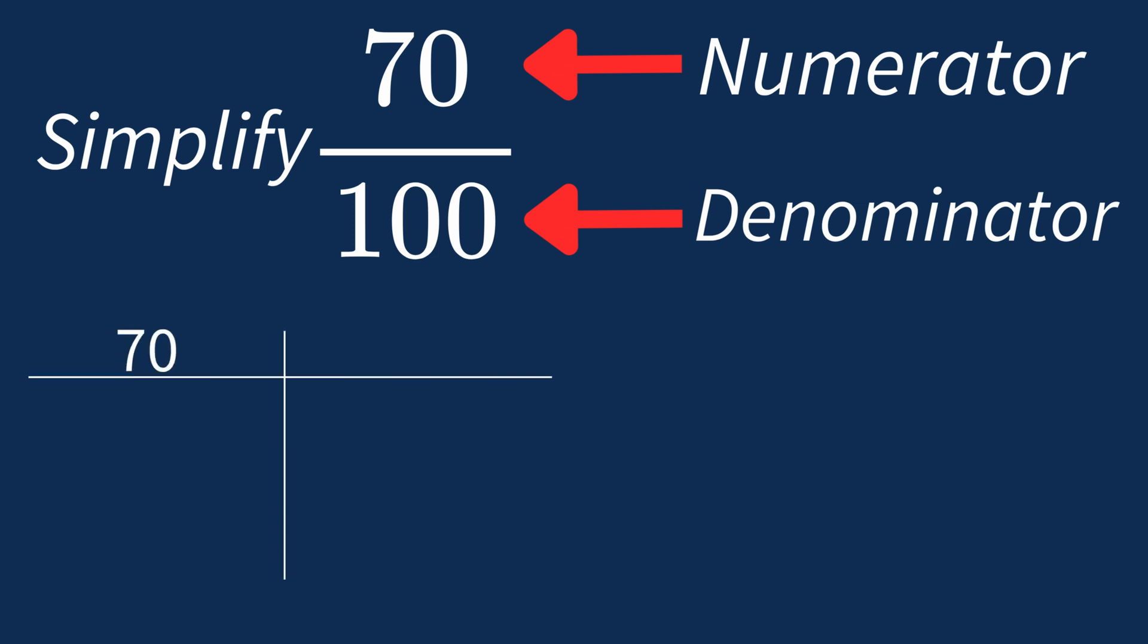For 70, the factors are 1, 2, 5, 7, 10, 14, 35, and 70.